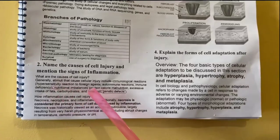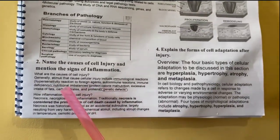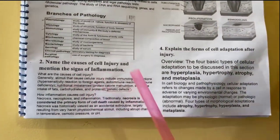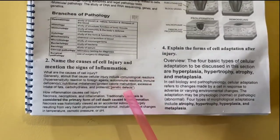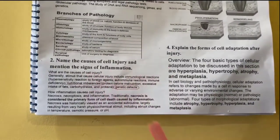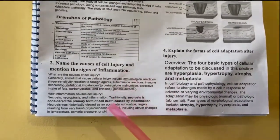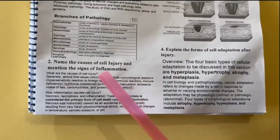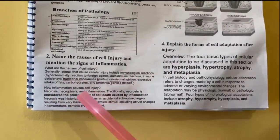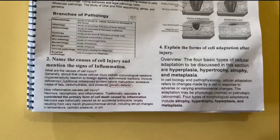Next cause is nutritional imbalances. Nutritional imbalance is one cause of cell injury. Then there are genetic defects as another cause of cell injury. Next, the signs of inflammation — how inflammation causes cell injury.